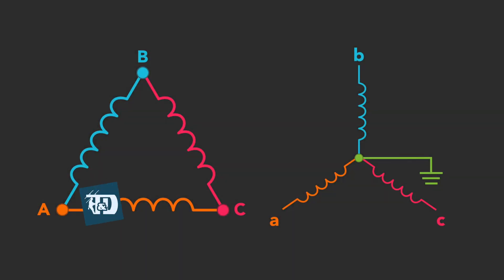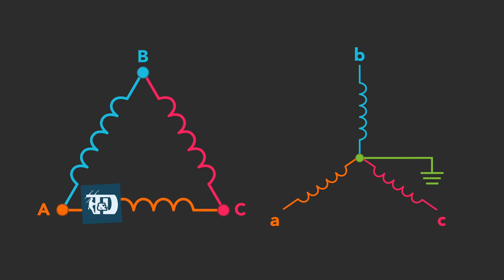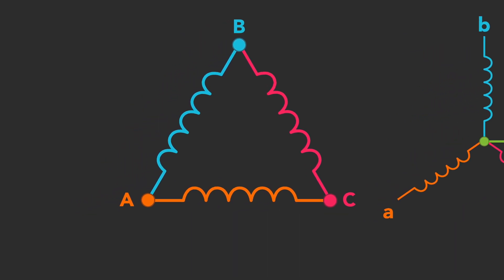Now let's look at a delta connection in relation to a Y connection. Here we have a delta and a Y one-line diagram. For illustration purposes, we'll place a circle around the delta one-line.